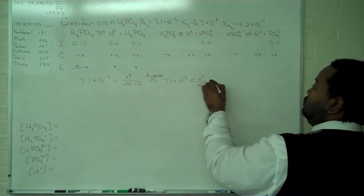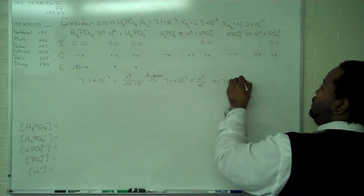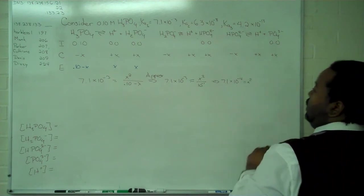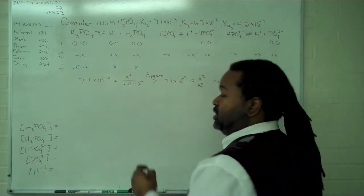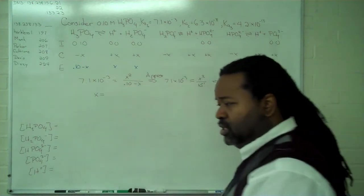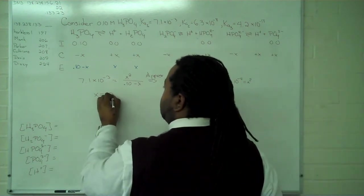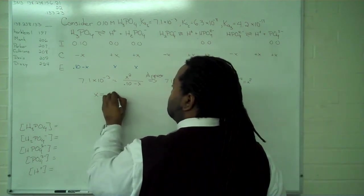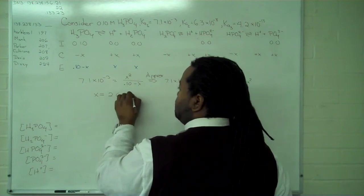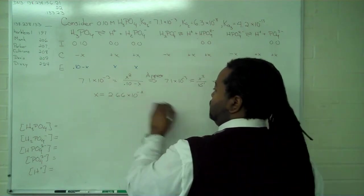We can show very simply that this is 7.1 times 10 to the minus 4 equals x squared. And the value we get for x by approximation comes out to be 2.66 times 10 to the negative 2.